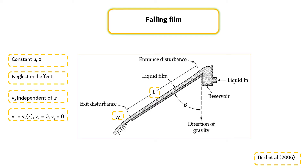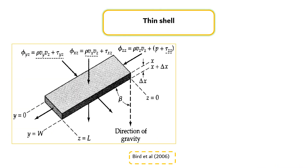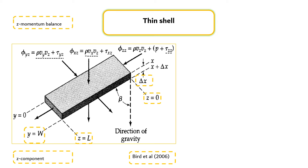From Table VI, it is seen that the only non-vanishing components of tau are then tau_xz equals tau_zx equals minus mu dVz/dx. We now select as the system a thin shell perpendicular to the x-direction as shown in the figure. Then we set up a z-momentum balance over this shell, which is a region of thickness delta x bounded by the planes z equals 0 and z equals L, and extending a distance W in the y-direction. The various contributions to the momentum balance are obtained with the help of quantities in the z-component columns of tables in Module 3.